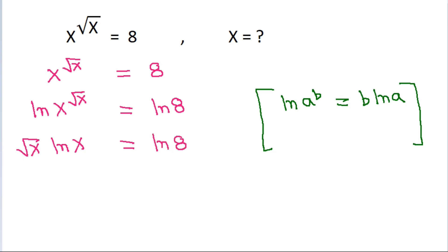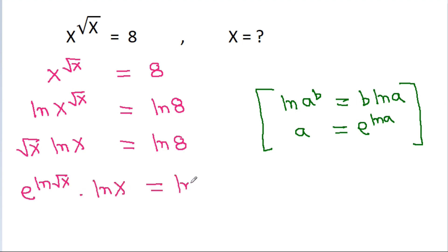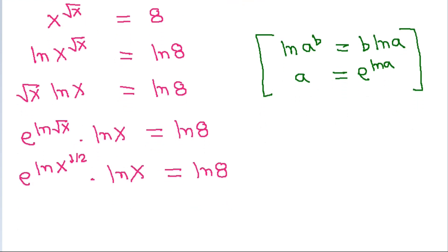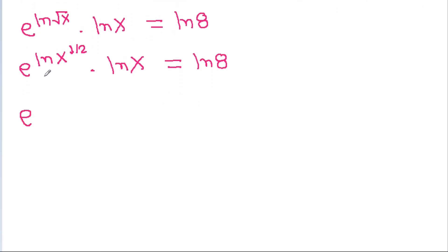We can also write this as e power ln 8. So root x will be equal to e power ln, and root x is x power 1 by 2, times ln x is equal to ln 8. Then e power ln x power 1 by 2 becomes 1 by 2 times ln x, times ln x is equal to ln 8.